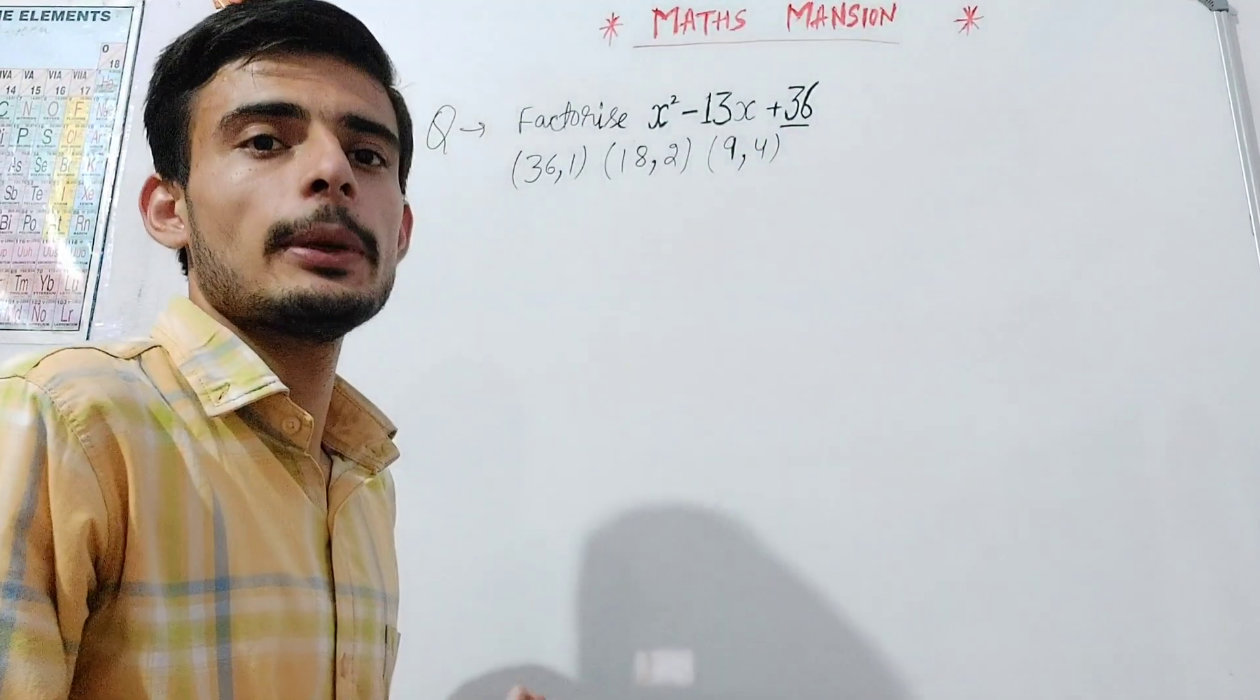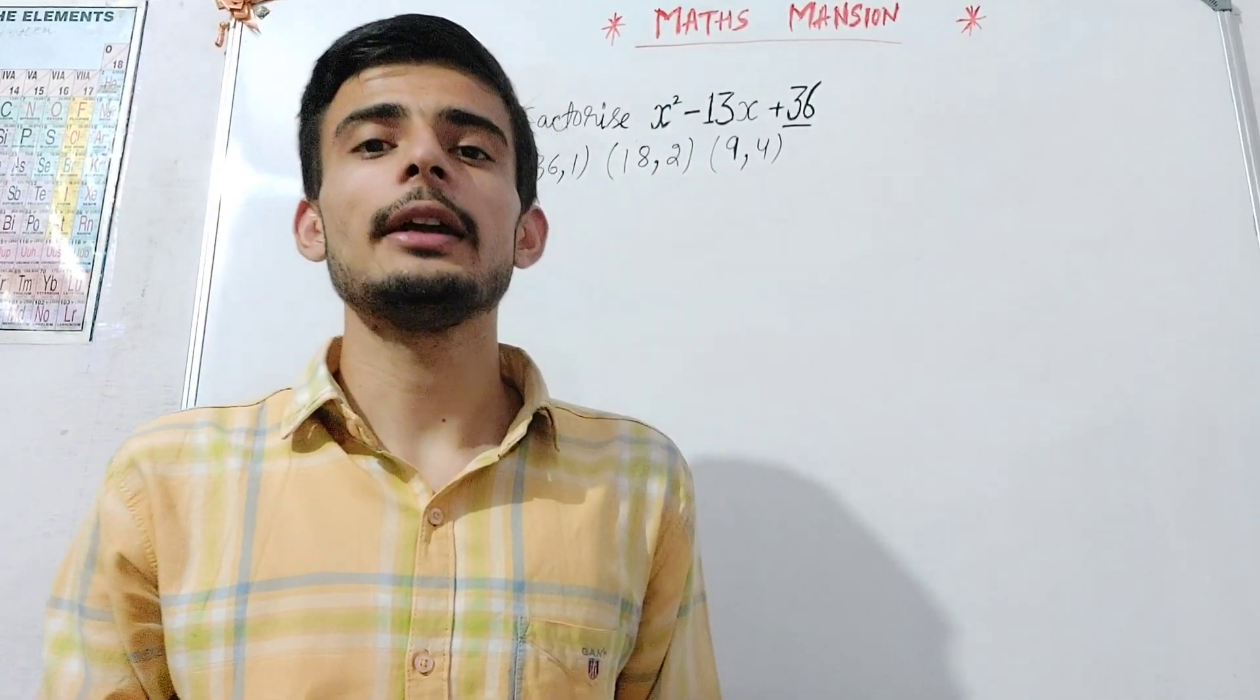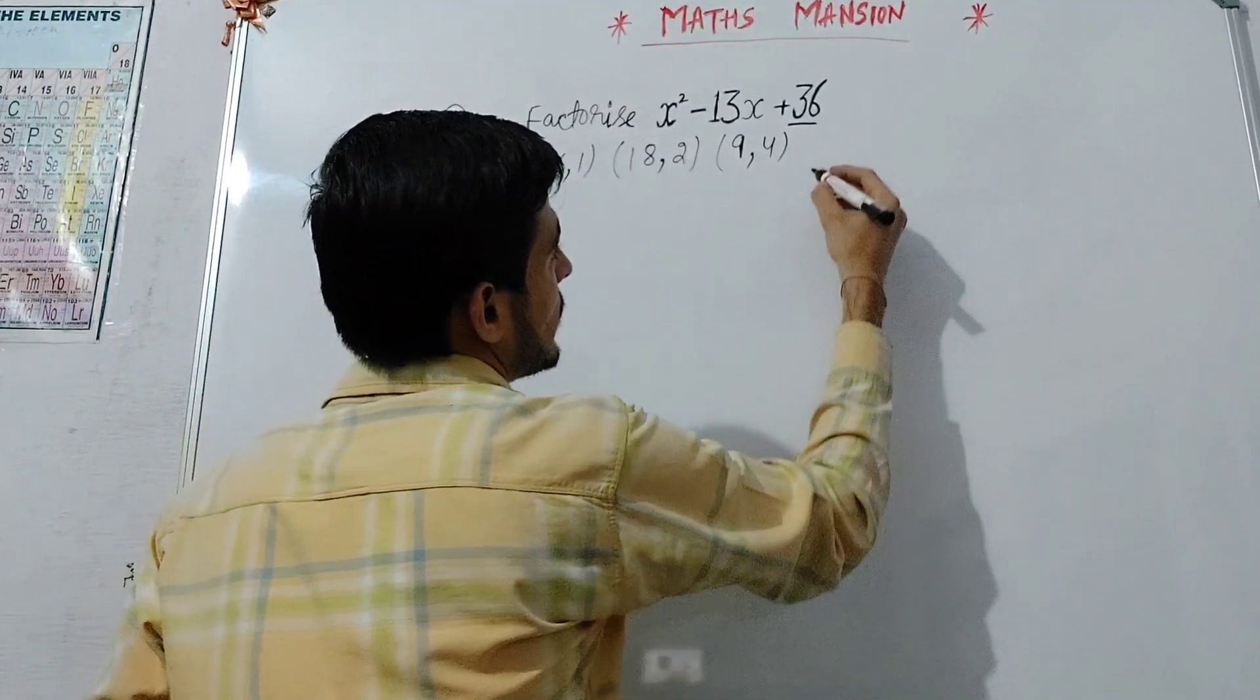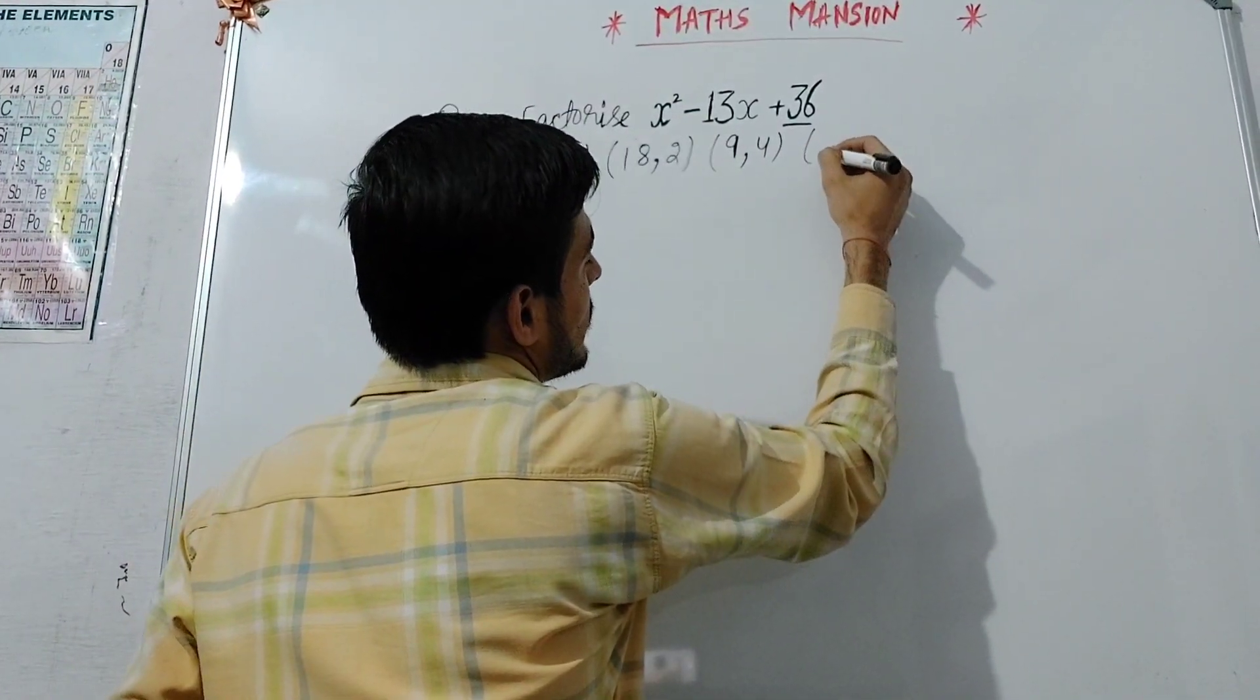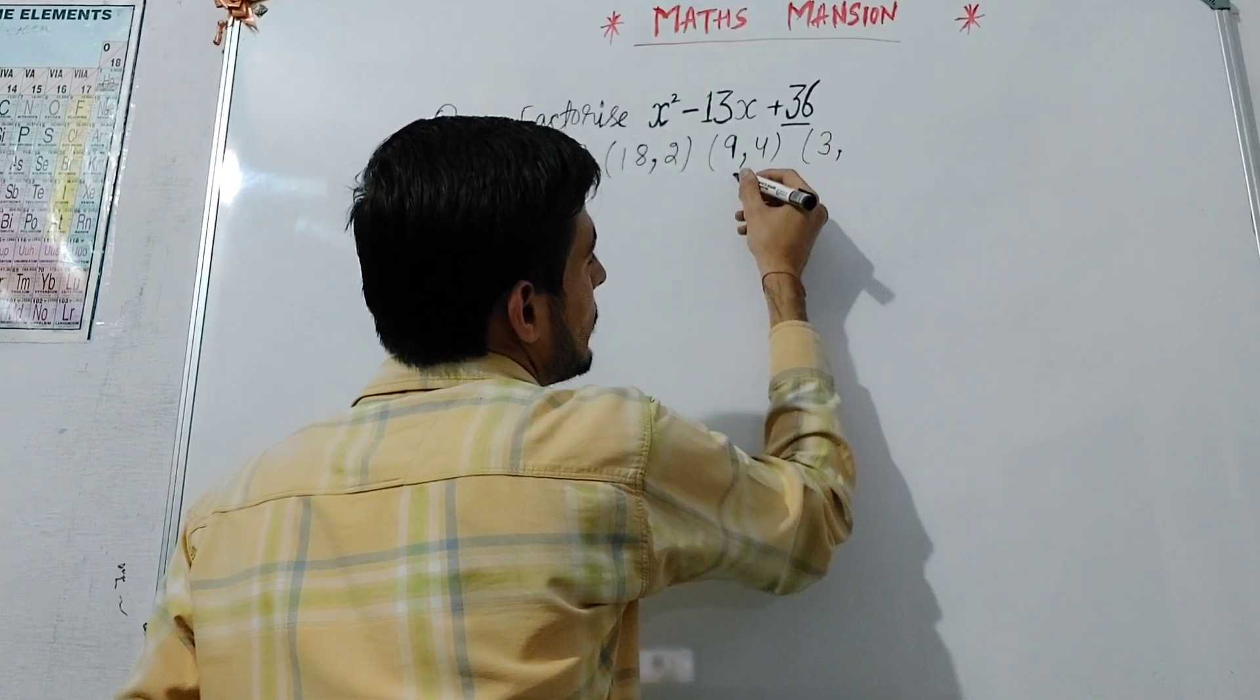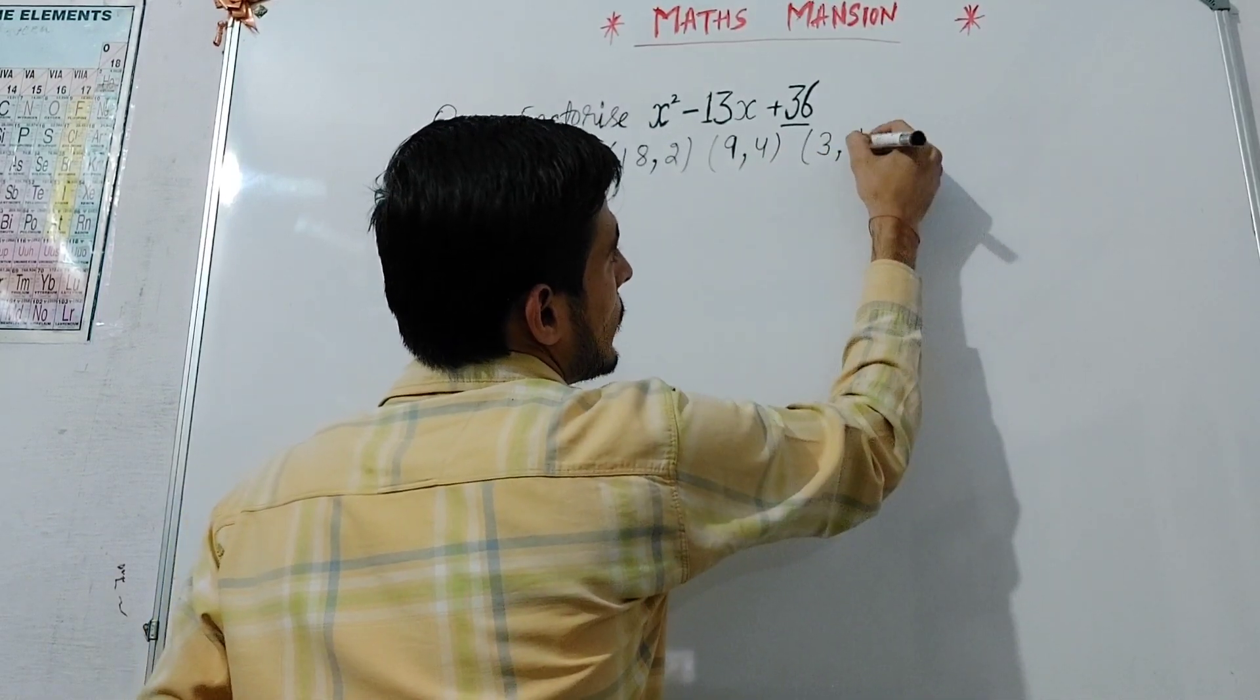Now, 9 cannot be divided by 2, so we divide 9 by 3. Dividing 9 by 3, we get 3. And multiplying 3 with 4, we get 12.